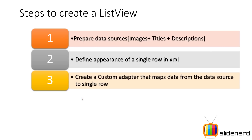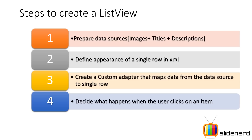Step three: create a custom adapter that maps the data from the data source to a single row. The data source can be anything — a simple array, a strings XML file, a database cursor — and you need to put that data inside specific views in your single row. Step four: decide what happens when the user clicks an item. In this video I'm going to focus specifically on creating that structure you saw above.